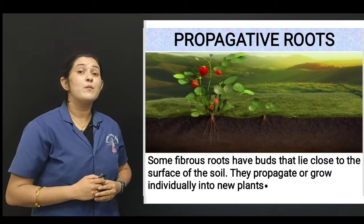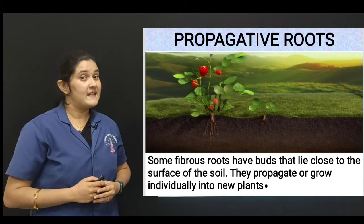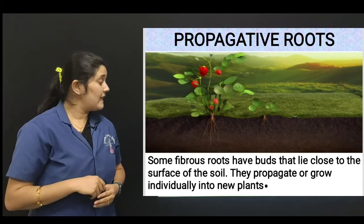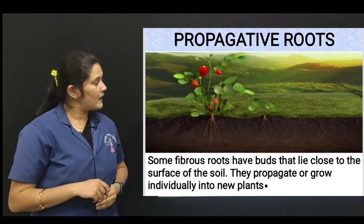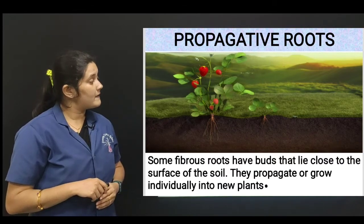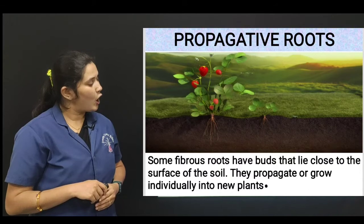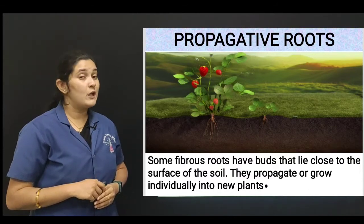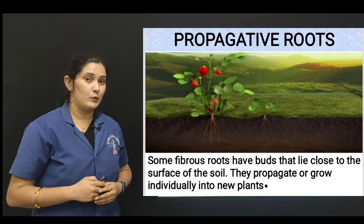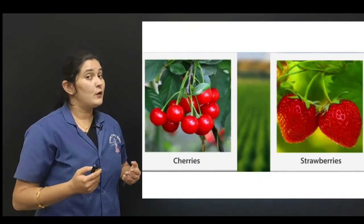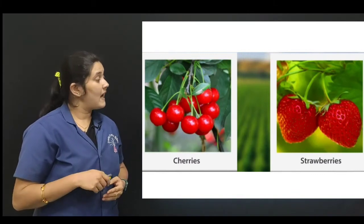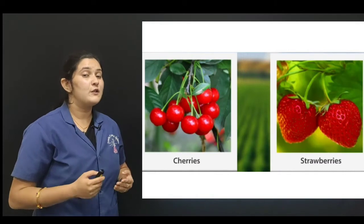Next are propagative roots. These are special fibrous roots. Some fibrous roots have buds that lie close to the surface of the soil. These buds propagate and grow individually into new plants. They are propagative roots. You can observe examples here — the roots of cherries and strawberries are propagative roots.